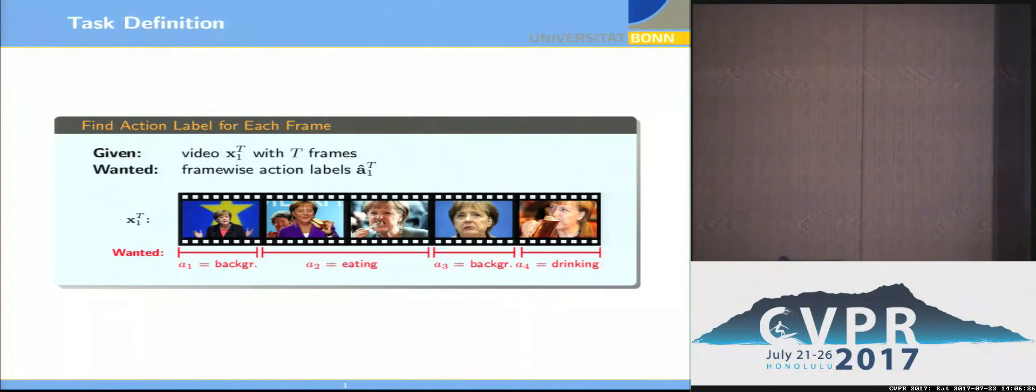What do we actually mean by action learning or action labeling? Assume we are given a video X with T frames. Then we want to find for each frame a label of the action that is actually occurring in this frame. Like in this example, we have a video of Angela Merkel doing nothing, eating something, again doing nothing, and then having a drink in the end. So what we want to achieve is to assign a label to each frame.